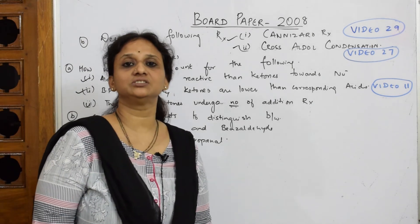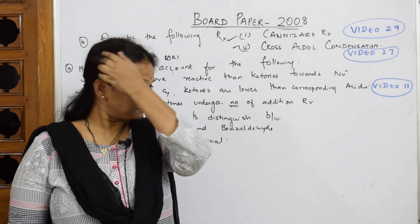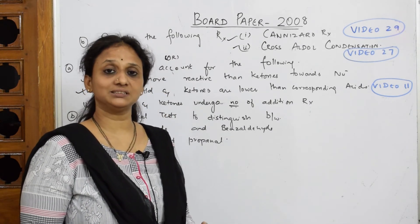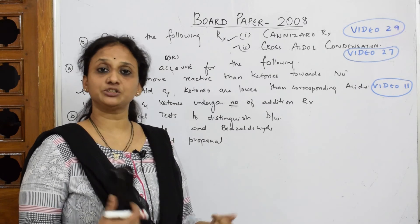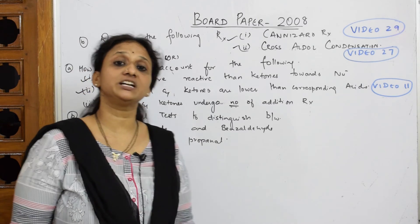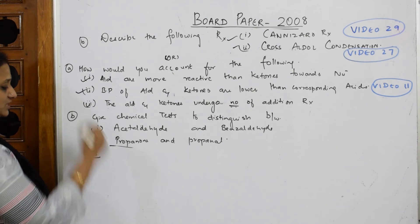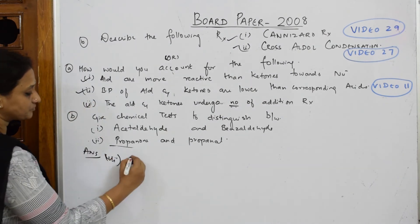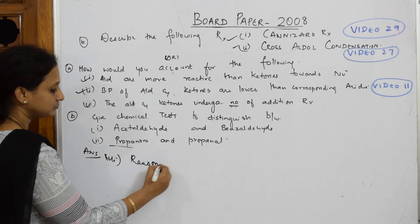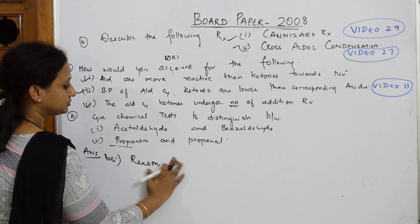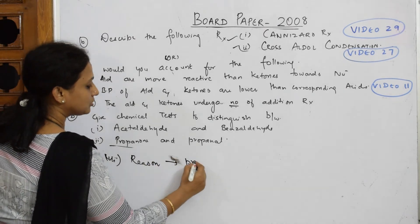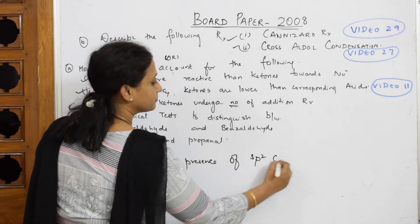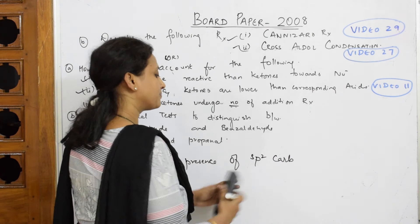I'm done with this also. Let us come back. Aldehydes and ketones undergo number of addition reactions. Yes, we have seen addition of HCN, addition of NaHSO3, formation of hemiacetals, acetals, addition of ROH. Why are they showing some addition reactions? You can just write the reason now. This is your third part.